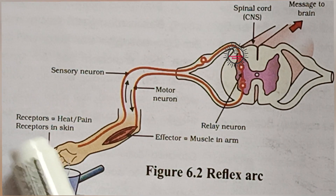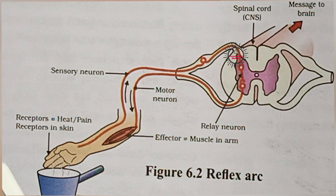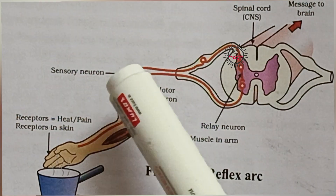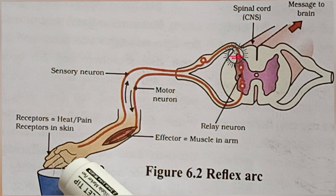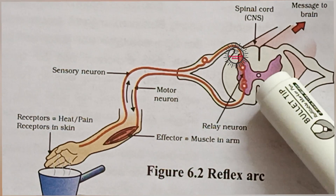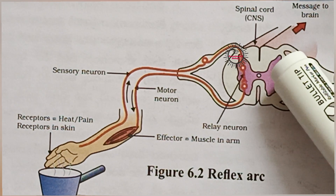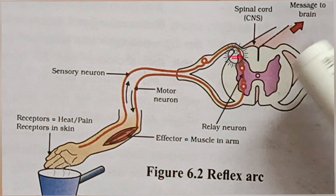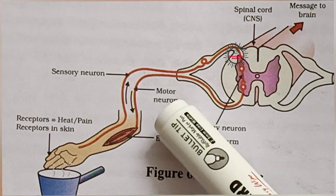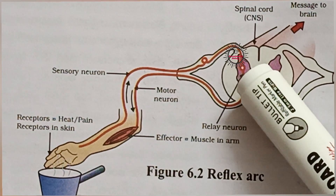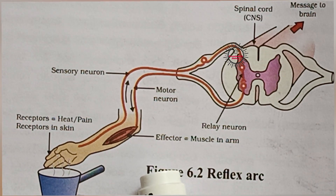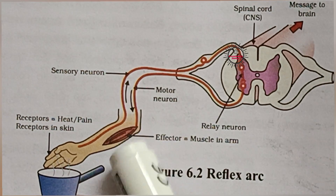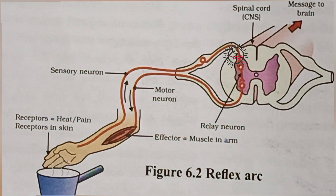These are the five components of the reflex arc which receive stimulus and produce a response. The receptor is the organ which receives stimulus from outside. The sensory neuron is the nerve cell which takes the information of the reflex action to the spinal cord. The relay neuron, present in the spinal cord, receives the information from the sensory neuron, analyzes it, and gives a response. That response is taken over by the motor neuron, which passes it to the effector organ — the target organ which has to react to the reflex action.